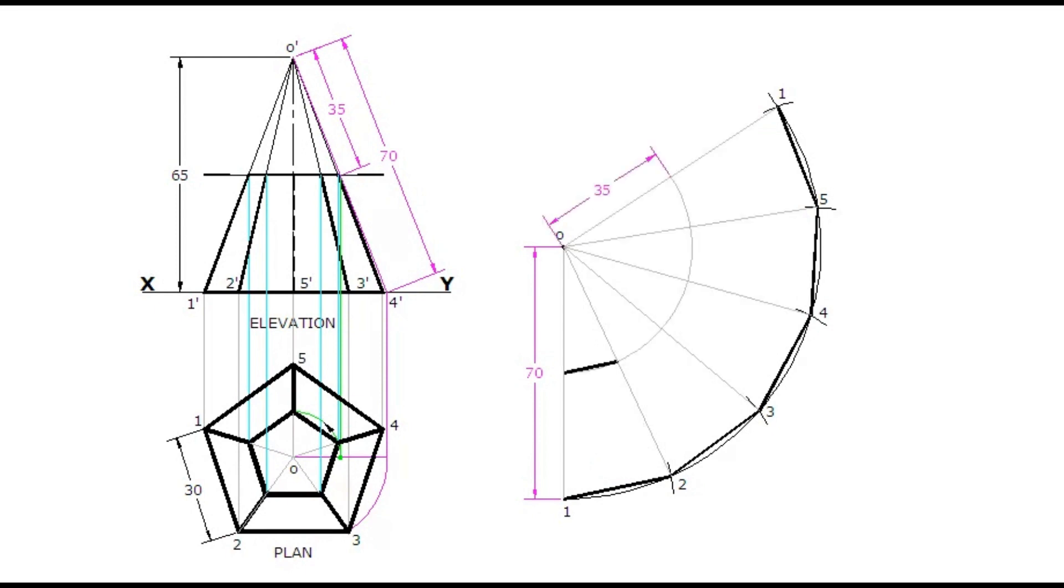Take the second slant edge length in the compass and cut an arc. Join the intersection points of this arc with the radial lines. Darken the required edges of the development.